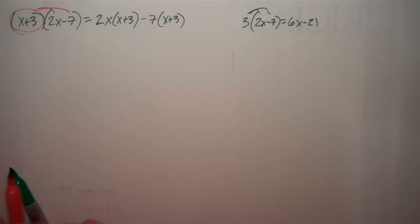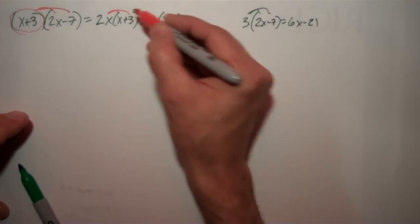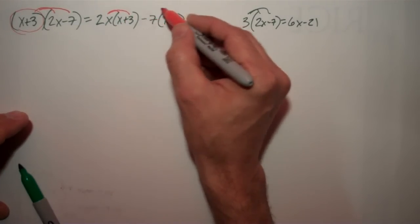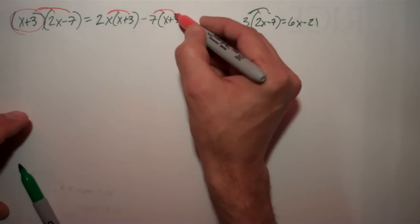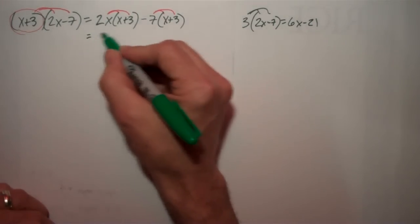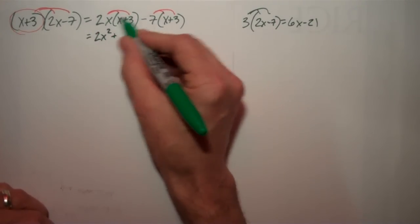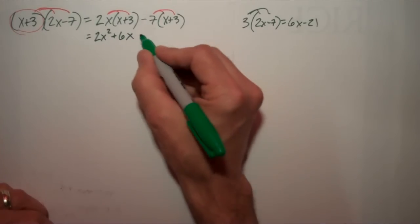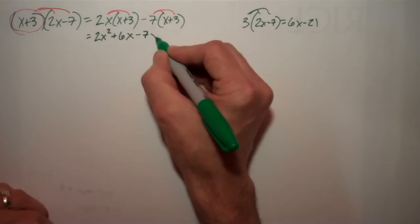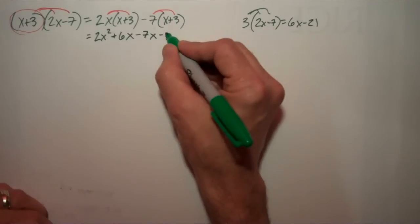And now, we say, I'm just going to distribute again. Distribute the 2x times x, and the 2x times 3, and distribute this negative 7 times x, and the negative 7 times 3. So what does that get us? It gets us 2x squared plus 6x, that's 2x times 3, minus 7x, minus 7 times 3, 21.